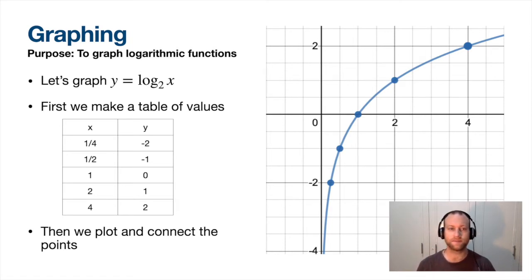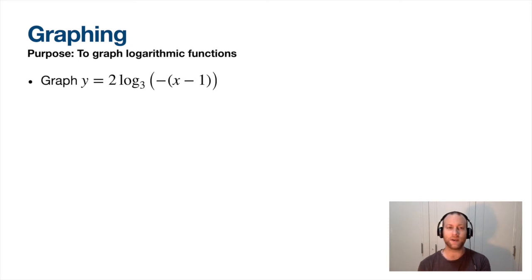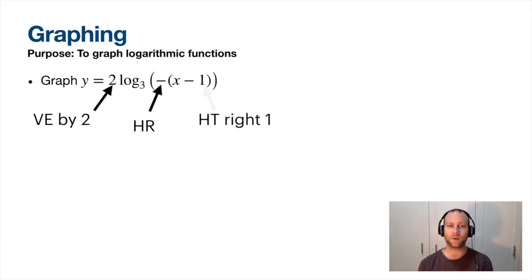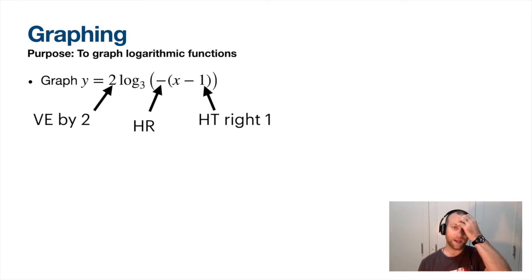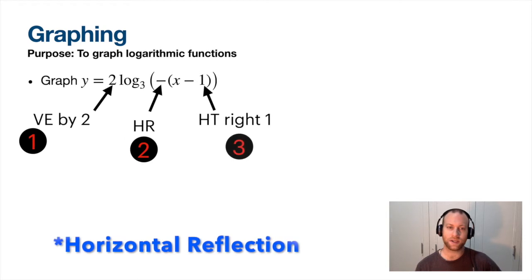Now let's try a transformed function. We've got a vertical expansion by 2, a horizontal reflection, and a horizontal translation one to the right. All of these transformations can be applied to logs as you can see. The order is: vertical expansion, vertical reflection, horizontal translation.